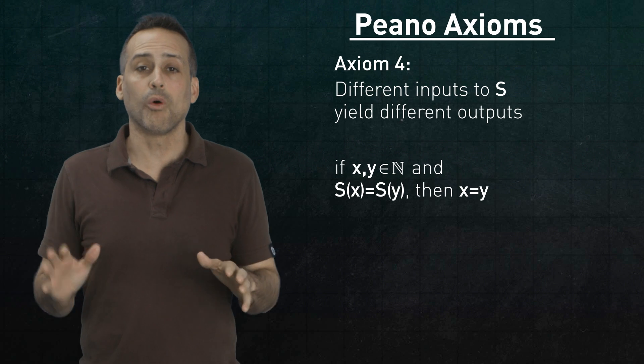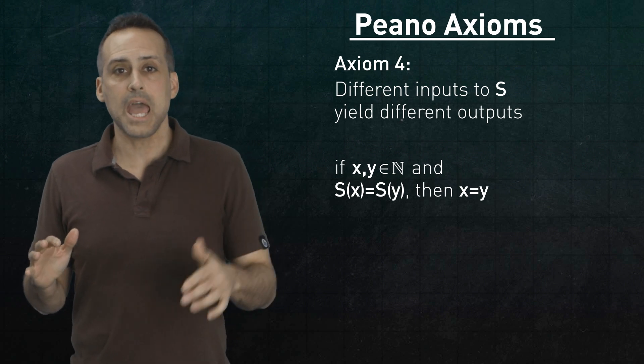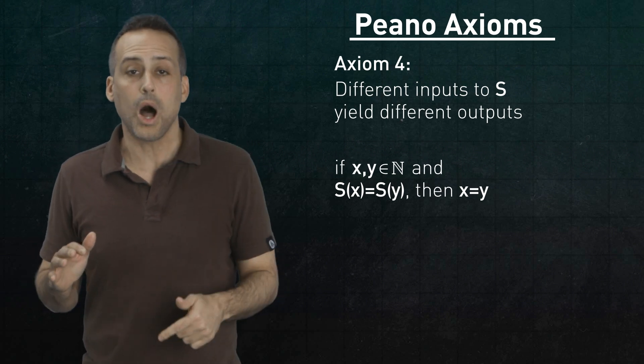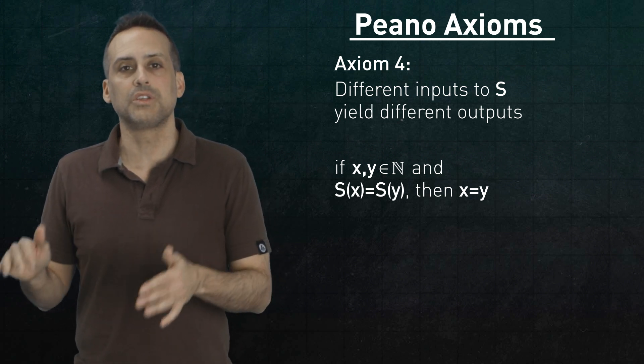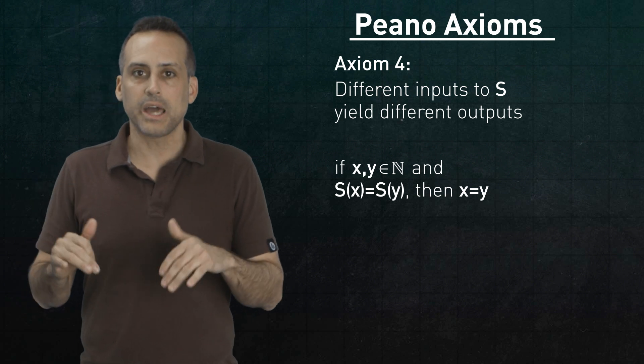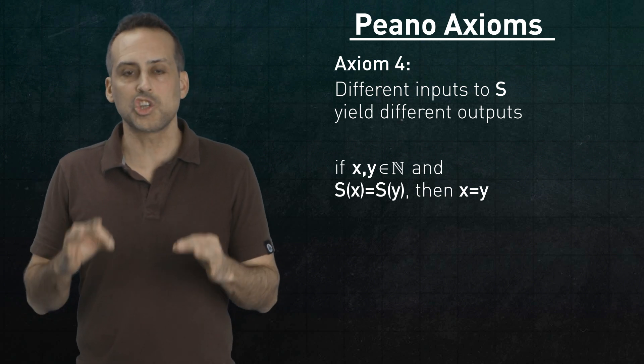Enter axiom 4. If x and y are in n, and s of x equals s of y, then x equals y. In other words, different inputs to s will always give different outputs. Now, finally, we're guaranteed an infinite chain. Watch.